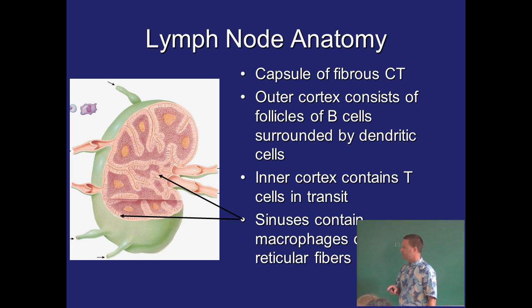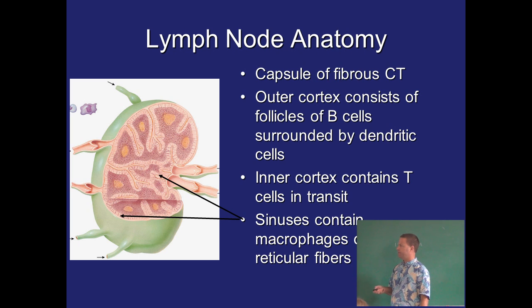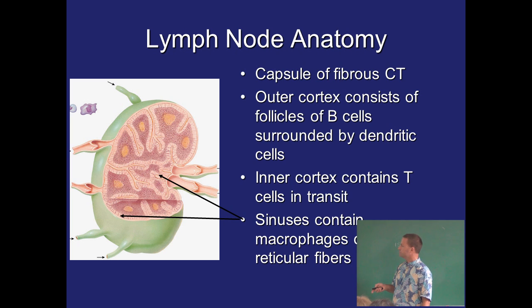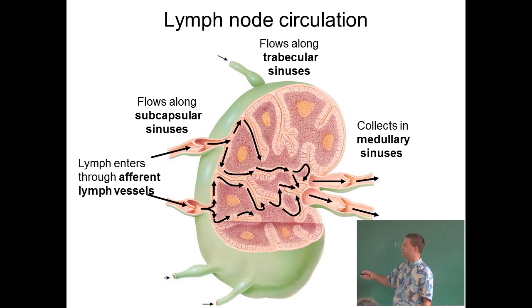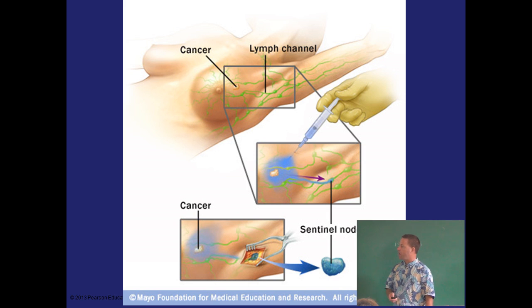When you take the 152 lab next semester and learn how to do physical exams, part of it will be palpating these lymph nodes to see if they're a normal or abnormal size. Lymph node anatomy: they're mainly solid with lots of reticular tissue containing B lymphocytes and macrophages. Lymphatic fluid comes in one end, filters along trabeculae, goes through a meshwork of reticular tissue where B cells are located, and the filtered lymph exits via efferent vessels.